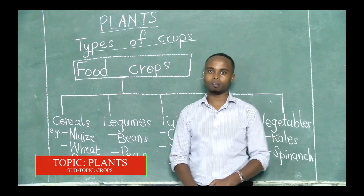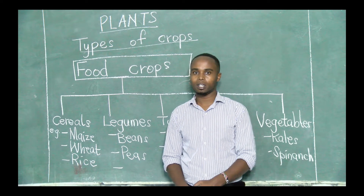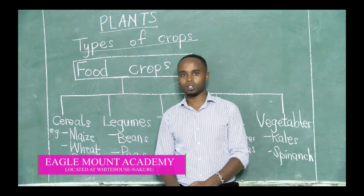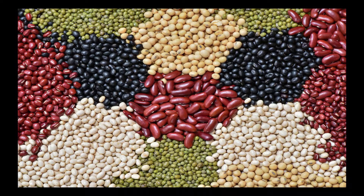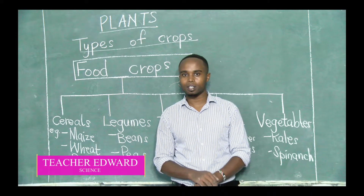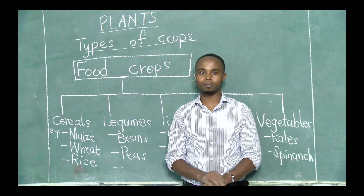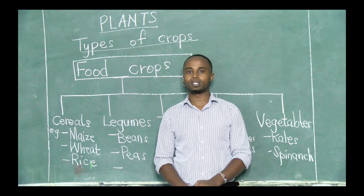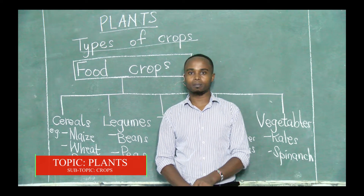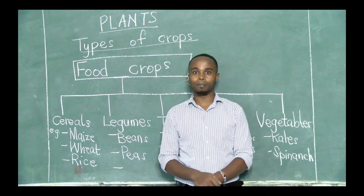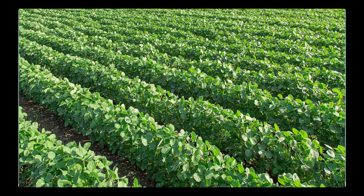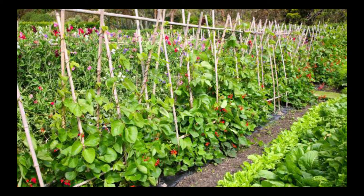I know you have seen the pictures displayed on your screen, and I know that you have a lot of cereals in your houses. From there, we have legumes — legumes is another group of food crops. A good example is beans. Beans are examples of legumes. You have different varieties of beans as you can see on your screen — those are beans, that is how they look like in the field.